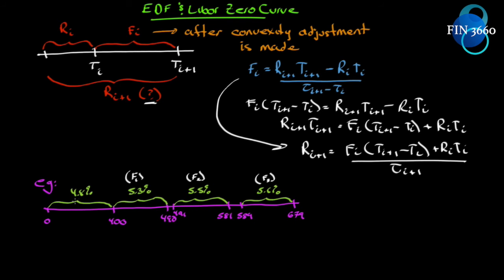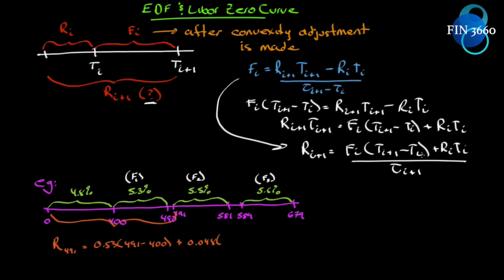The first thing we have to figure out: we have the zero rate for zero to 400 — can we get a zero rate from zero to 491? Yes. We're looking for r_491. All we have to do is fill in what we observe: fi for that period is 0.053, multiplied by the distance in time we're covering (491 minus 400), plus 0.048 times 400 days, all divided by 491. We get 0.04893.